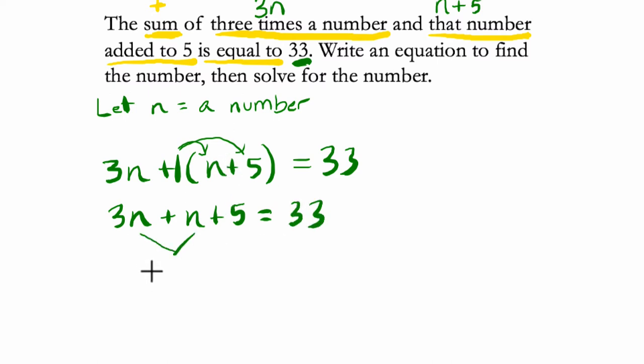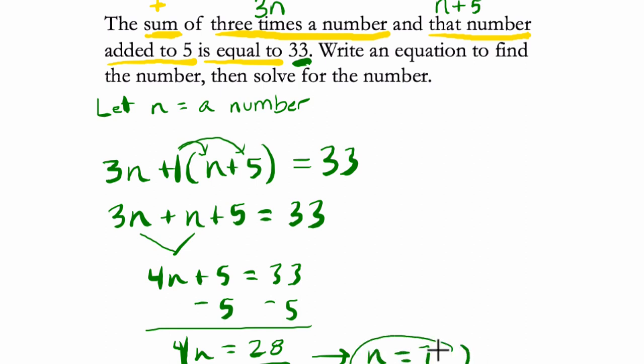Now we have 3n plus n - that makes four n's - plus 5 equals 33. We subtract 5 from both sides and get 4n equals 28. To finish, we divide both sides by four. Four divided by four is one, and 28 divided by four is seven. So n equals seven. Hope this helped.